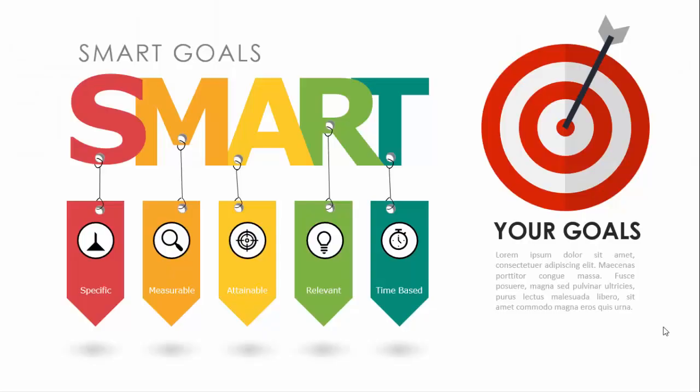SMART is the acronym for five elements: S for Specific, M for Measurable, A for Attainable, R for Relevant, and T for Time-based or Time-bound. You can set SMART goals to clarify your ideas, focus your efforts, use your time and resources productively, and achieve what you want in life.